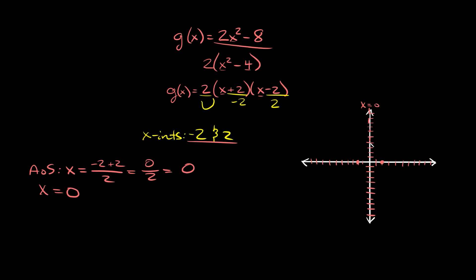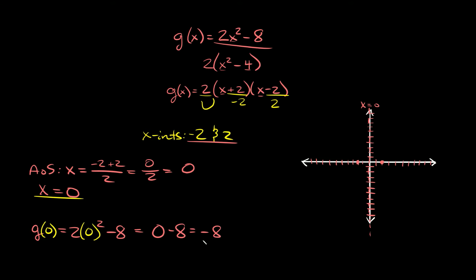To find the vertex we plug x equals 0 into the original function: g of 0 equals 2 times 0 squared minus 8. Zero squared is 0, times 2 is still 0, so this equals 0 minus 8, which is negative 8. The vertex is at 0 comma negative 8. We can plot that point and connect the dots to draw the parabola.